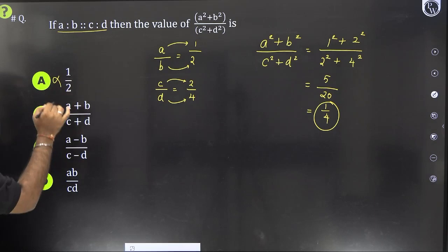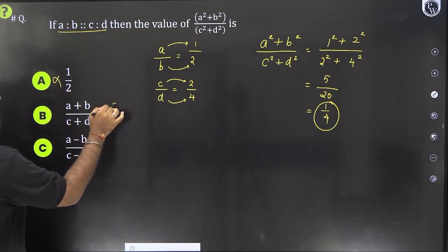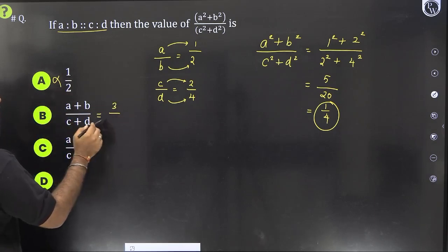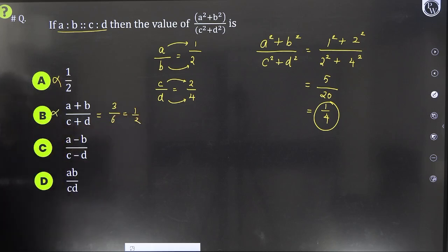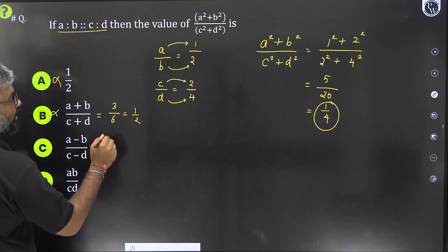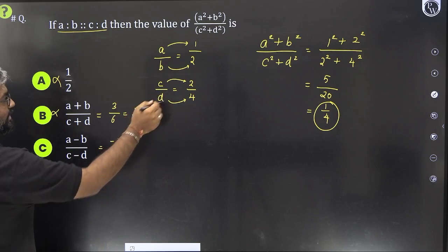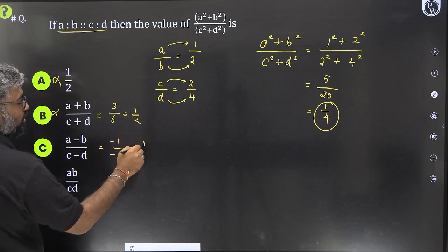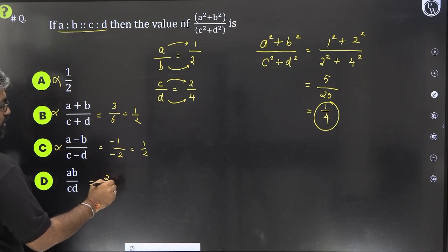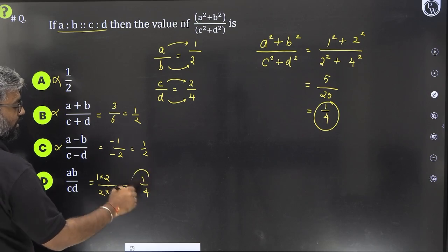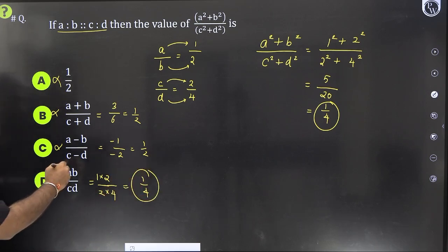This is 1 by 2. This is not our answer. A plus B is 3. 2 plus 1 and 4 plus 2 is 6. This is also 1 by 2. Not our answer. A minus B is minus 1. C minus D is minus 2. This is also equal to 1 by 2. This is the only option that gives us 1 by 4. This is our answer.